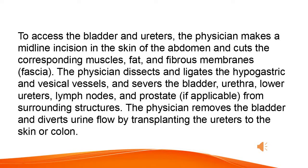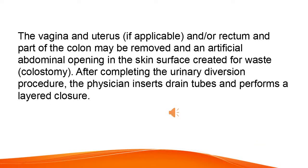The physician removes the bladder and diverts urine flow by transplanting the ureters to the skin or colon. The vagina and uterus, if applicable, and/or rectum and part of the colon may be removed, and an artificial abdominal opening in the skin surface created for waste — colostomy. After completing the urinary diversion procedure, the physician inserts drain tubes and performs a layered closure.